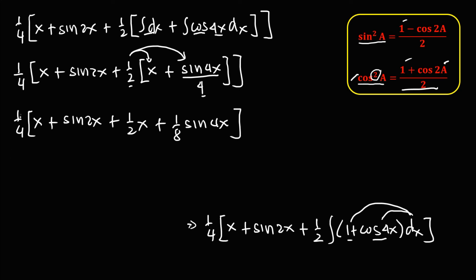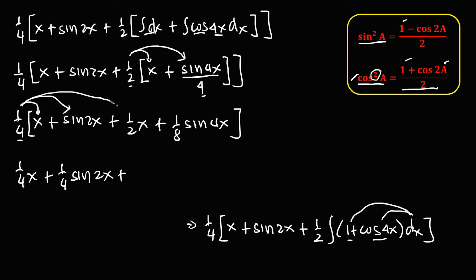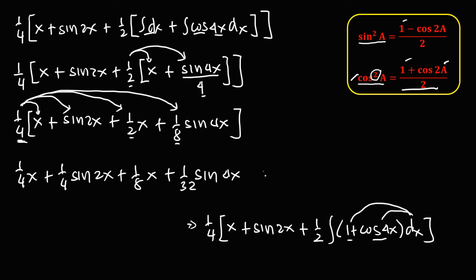Then distribute the 1 over 4 to every term: so we have 1 half x, plus 1 half sine 2x, plus — distributing to this term — 4 times 2 gives 1 over 8 x, plus 4 times 8 gives 32, so 1 over 32 sine 4x.